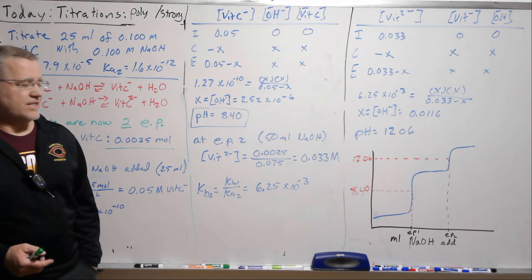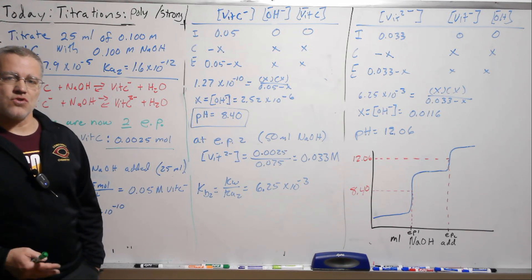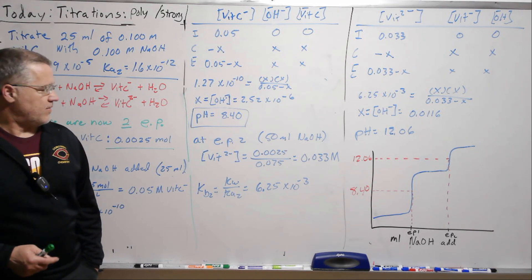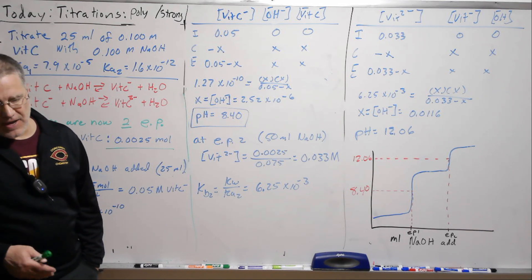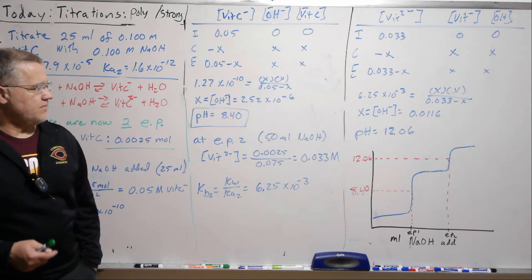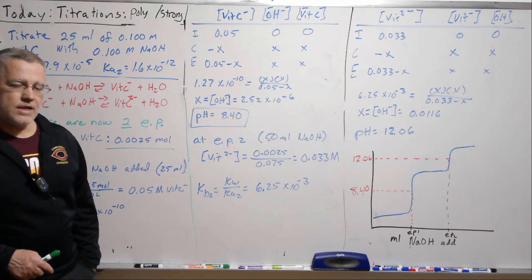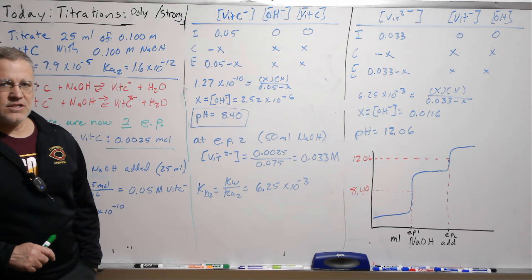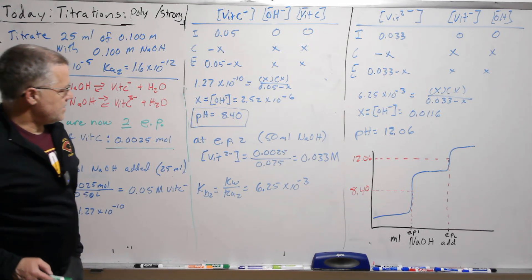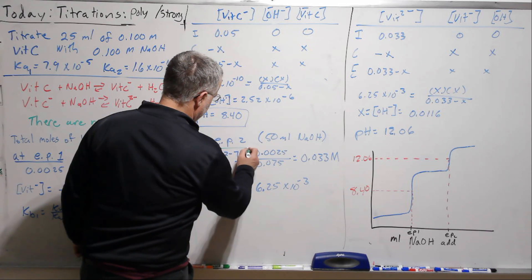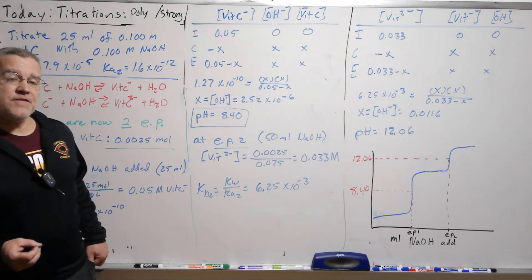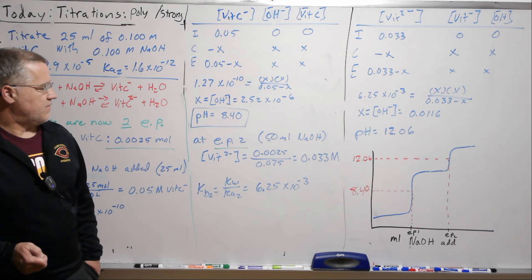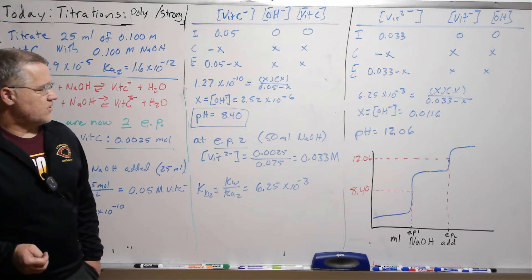And just like with the monoprotic acid, it's a weak acid with a strong base—we expect that we will be slightly basic at the equivalence point. All right, then we keep adding base. And again, we're going to skip those steps. It's very similar to the full analysis we did with the monoprotic acid. And we make our way to N2. Now we have added 50 milliliters and exactly twice the number of moles of sodium hydroxide.